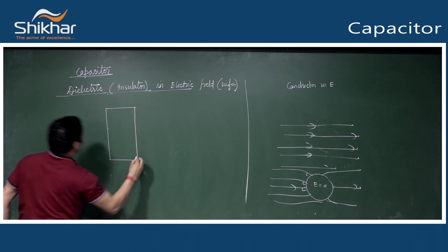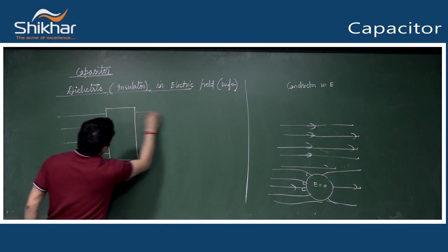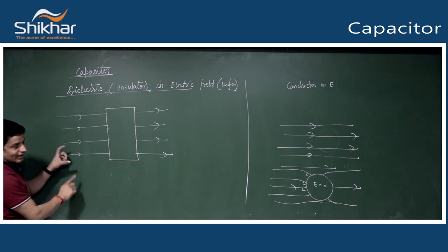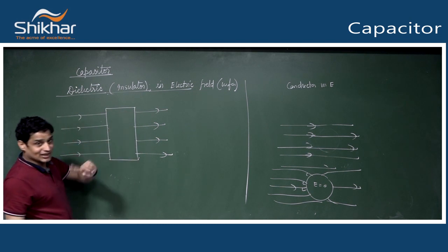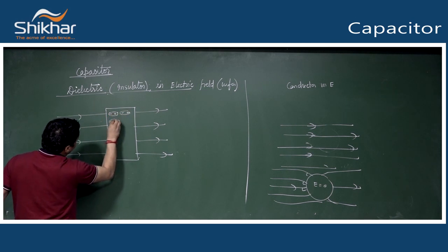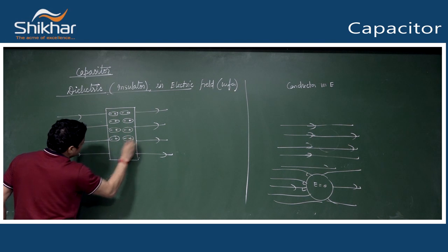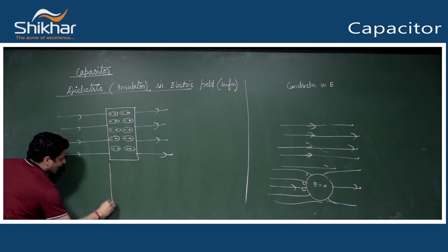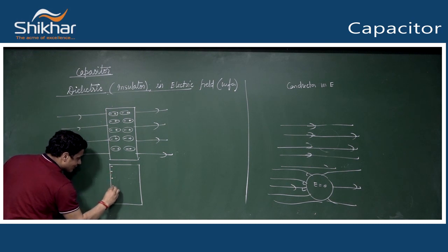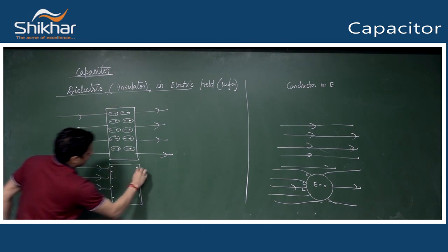When an external electric field is applied to a dielectric, the dipoles inside align parallel to the electric field. All dipoles align in the same direction. We can write all negative charges on one side and all positive charges on the other side.